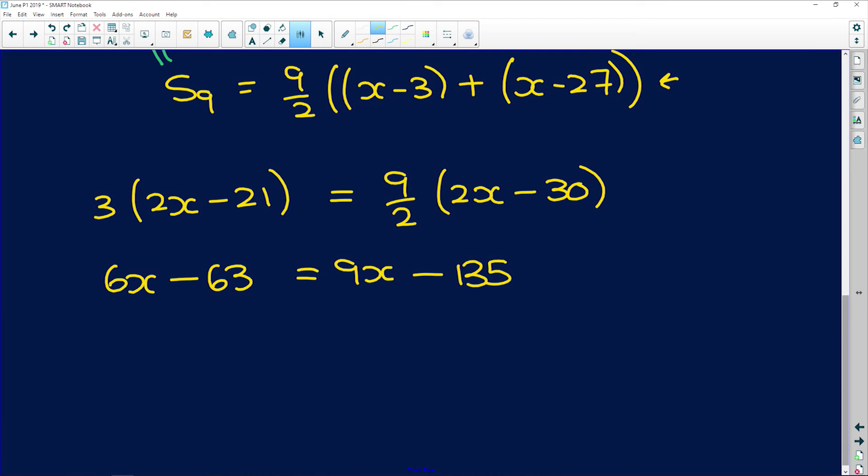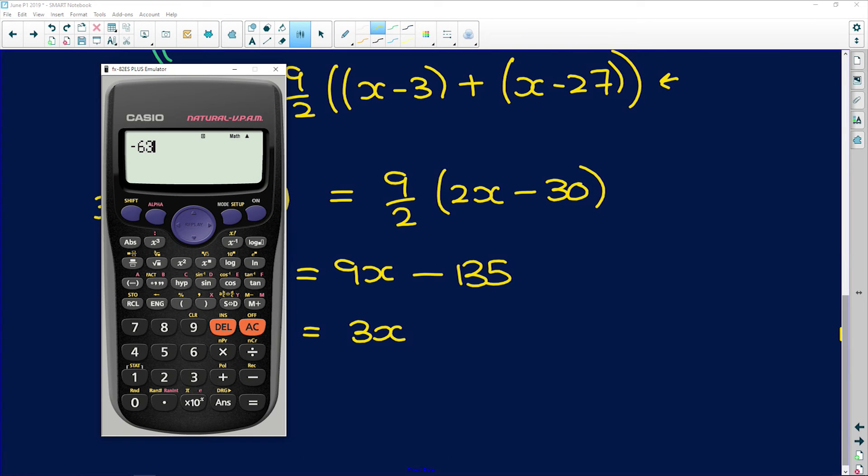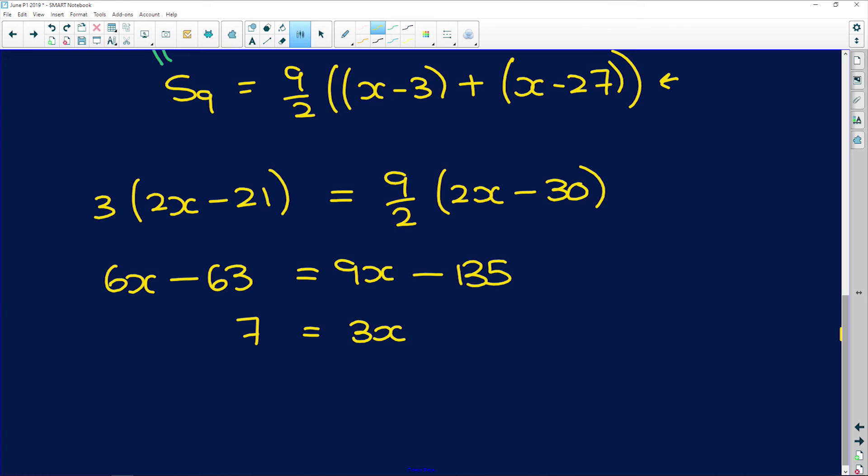Now we just carry on simplifying until we find x. So I'm going to subtract 6x from both sides, so I get 3x on this side, and if I add 135 to both sides, I get negative 63 plus 135 is 72.